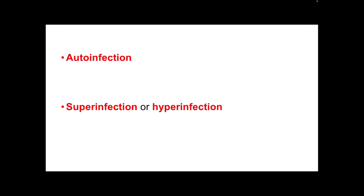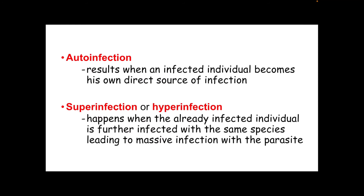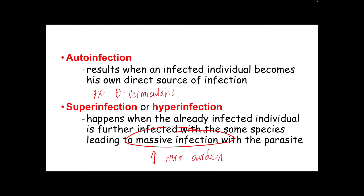Auto-infection results when an infected individual becomes their own direct source of infection — meaning you are infecting yourself. A classic example is Enterobius vermicularis, where a person infected can infect himself by inhaling or ingesting eggs of this parasite, usually while asleep. Super-infection happens when an already infected individual is further infected with the same species, leading to massive infection and a large increase in worm burden. An example is the alteration in the normal life cycle of Strongyloides stercoralis.